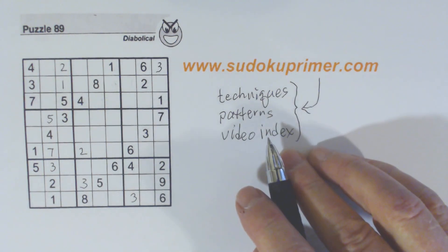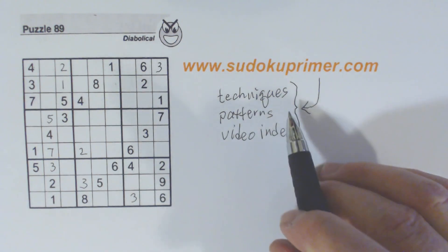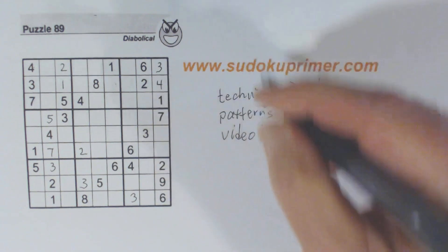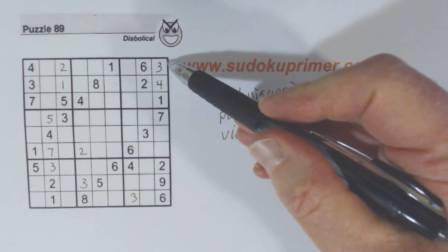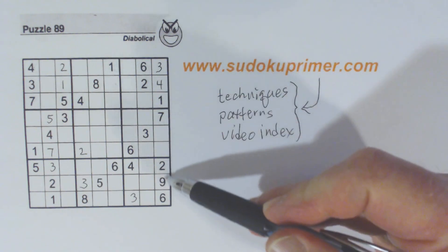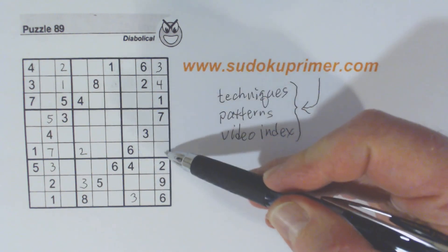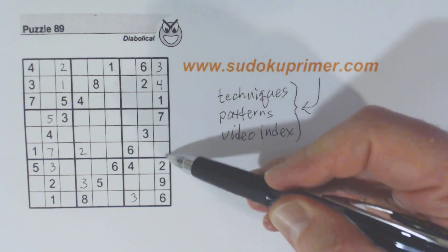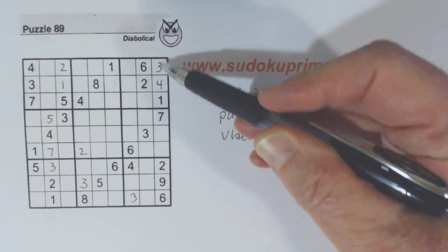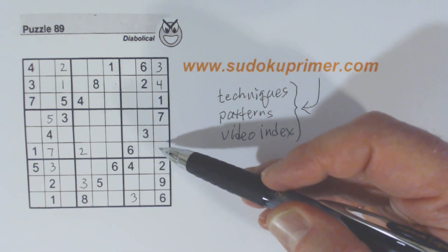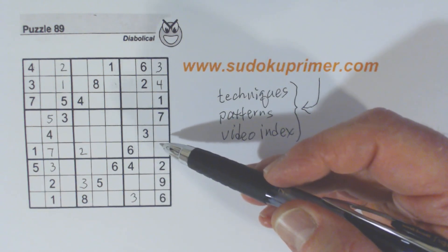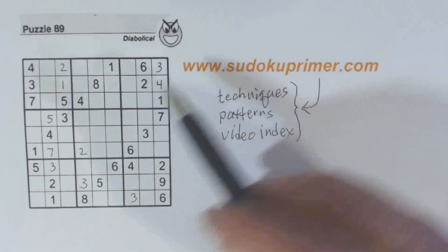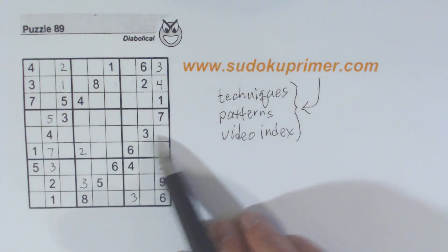And then we can put that three in — that's pretty straightforward. Four fits there, that's pretty easy. Now we're only missing five and eight here, so these are five-eight twins. And also we have five-seven twins here.